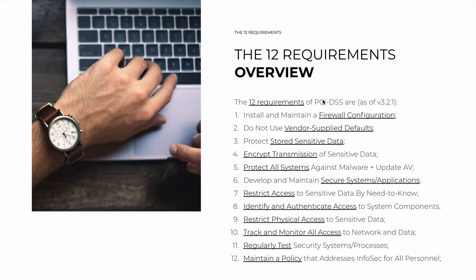The 12 requirements of the PCI DSS are, as of version 3.2.1: The first is about installing and maintaining a firewall configuration to protect your card data from traffic. Requirement 2 is about not using defaults — default passwords, default accounts, and so on — with the purpose of minimizing vulnerabilities. Requirement 3 is about protecting stored data with strong encryption and proper key management in your databases.